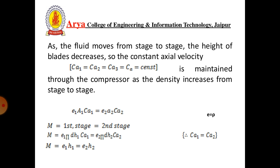From the continuity equation: ρAV = ρ1 A1 Ca1 = ρ2 A2 Ca2. The mass flow rate remains constant from first stage to second stage, giving us ρ1 H1 = ρ2 H2.